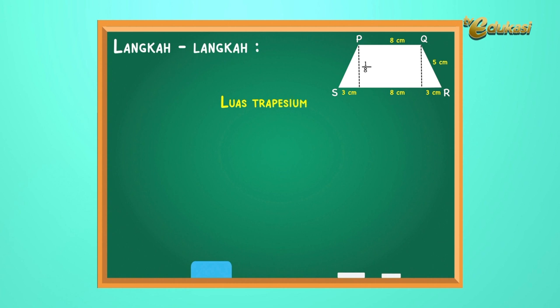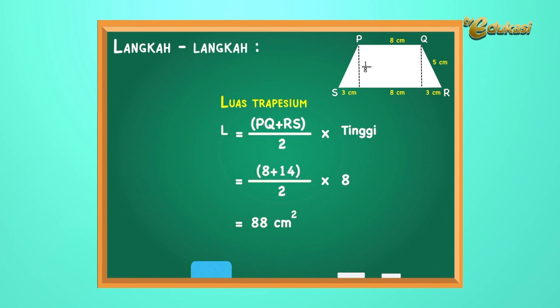Maka luas trapezium L = (PQ + RS) / 2 × tinggi. PQ dan RS ini sejajar ya, paham kan? Kita lanjutkan: L = (8 + 14) / 2 × 4 = 88 cm persegi.